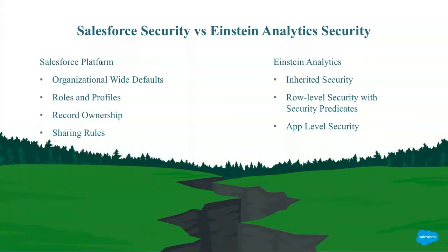This slide represents the differences between Salesforce security and Einstein Analytics. On the Salesforce side, we have things like org-wide defaults, roles and profiles, record ownership, and sharing roles to control security. In Einstein Analytics, we have inherited security which pulls from Salesforce security, but there are some record limitations there. We also have row-level security using security predicates, and then we have the app-level security that we talked about before.